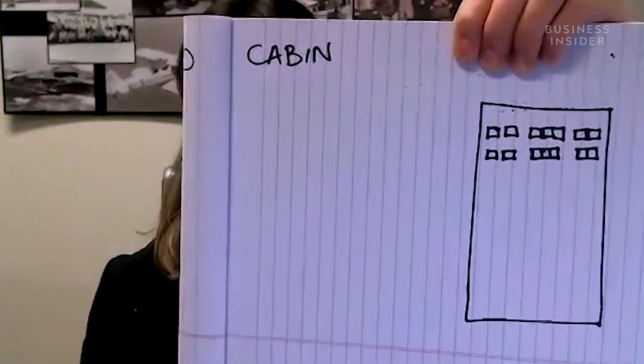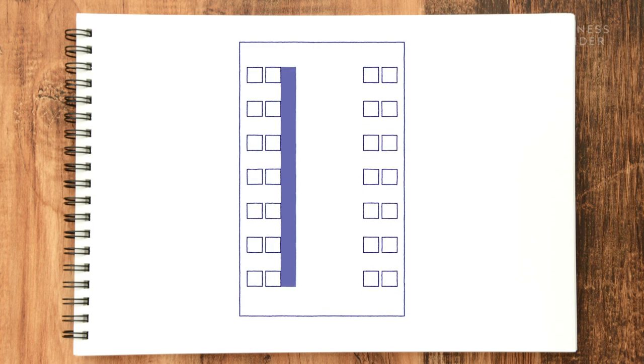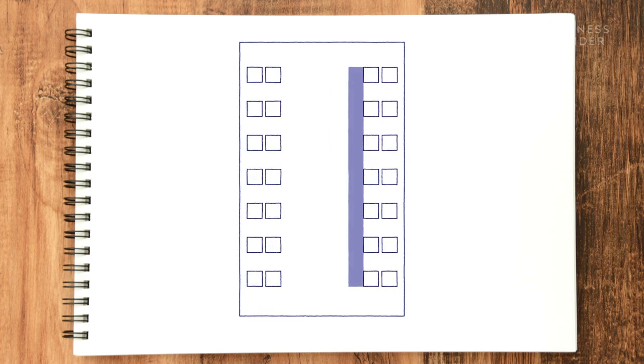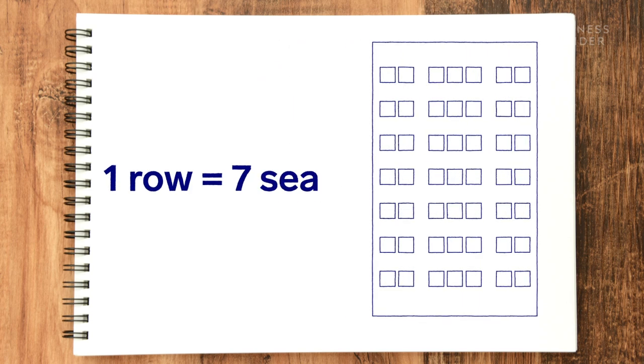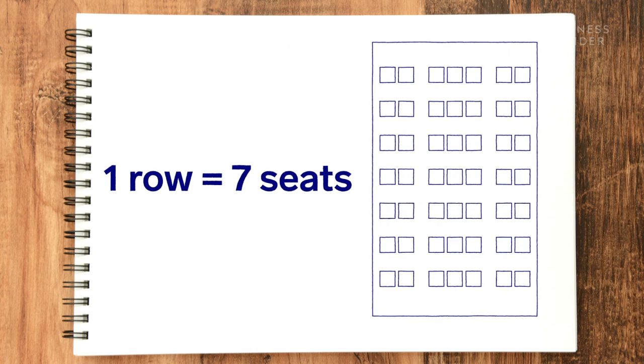When I first think about the plane, the variable I can replicate numerous times is the seat. In a 747, I have two seats here, two seats here, an aisle, an aisle, and three seats in the middle — so that's seven seats across in each row.